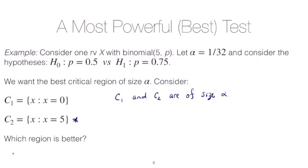So what we really need to do here is calculate gamma of C1 of 0.75 because this is the power for C1. And this would be the probability that X is equal to zero under the assumption that P is equal to 0.75. And this you could compute by hand. You could put it in R. This will be 1 over 1024.